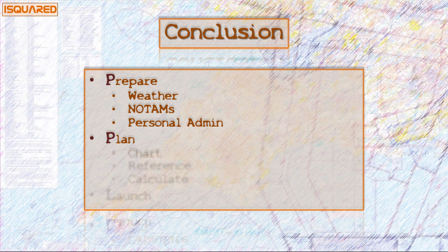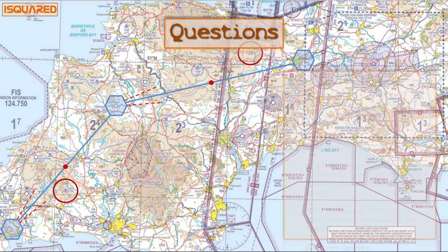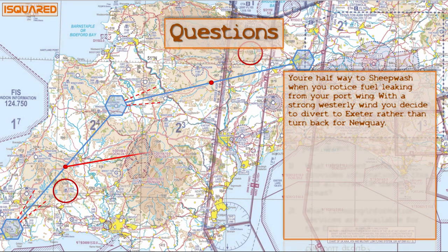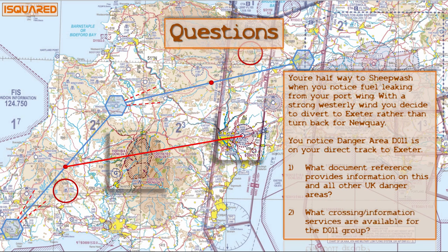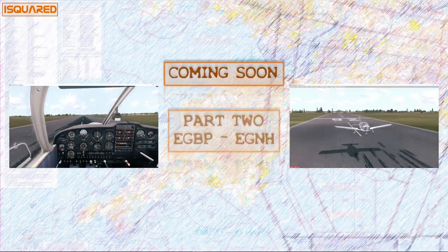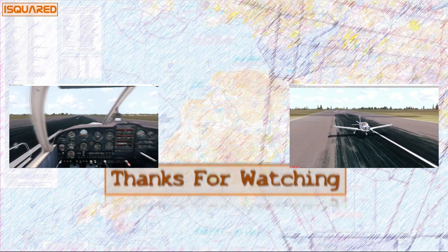In summary: prepare well by researching the weather and your NOTAMs; make sure your documents and ratings are all in order; plan in depth and understand your chart in detail; reference additional information and don't cut corners on your calculations; fly the whole route in your head first and you'll launch with confidence. Finally, two questions: you're halfway to Sheepwash when fuel starts leaking from your port wing, and with a strong westerly you decide to divert to Exeter rather than turn back. Danger area Delta 011 is on your direct track to Exeter — what document reference provides information on this and all other UK danger areas, and what crossing and information services are available for the Delta 011 group? Answers in the comments below — thanks for watching.